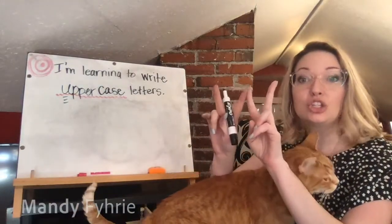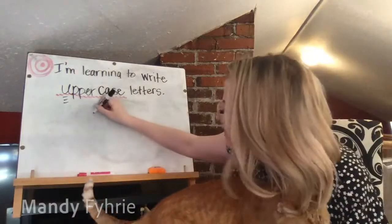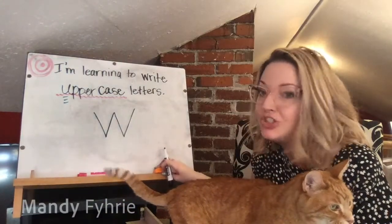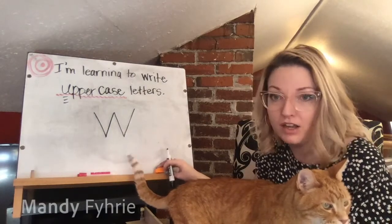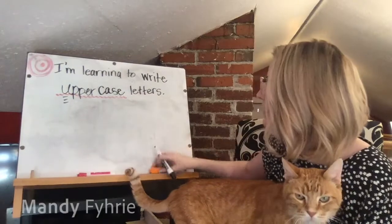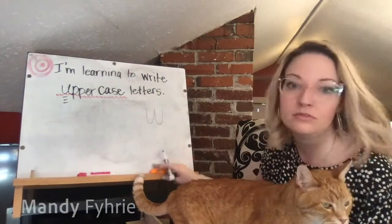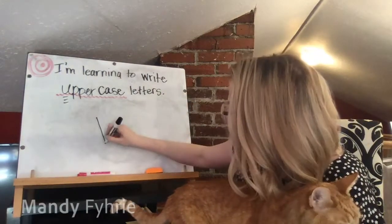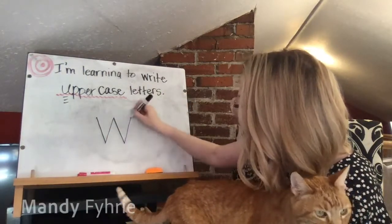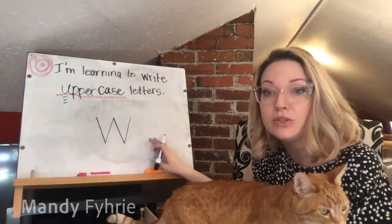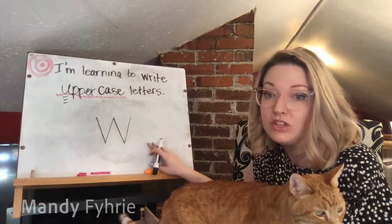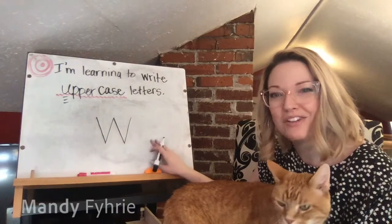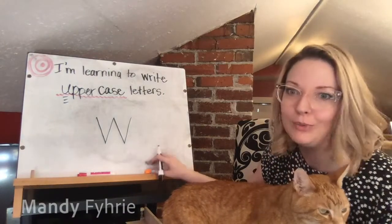Capital W looks like a V but with two valleys: slide down, climb up, slide down, climb up. The lowercase w looks just like a capital W but smaller. A W must have pointed bottoms — slide down, climb up, slide down, climb up. Stick with the basics for now until you become a pro; you may learn to write things differently later.